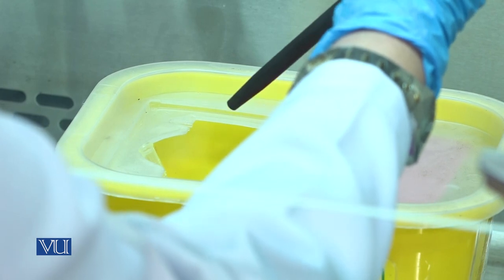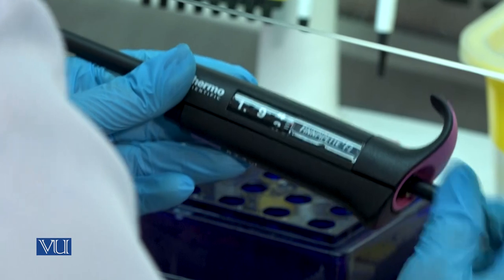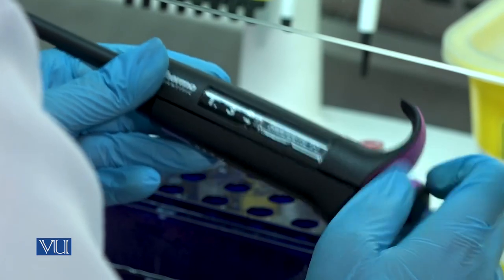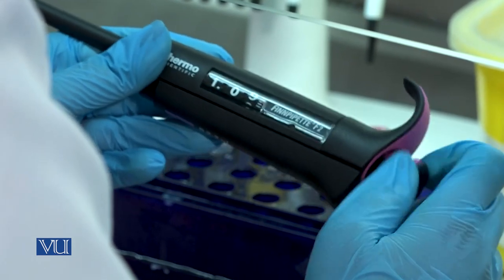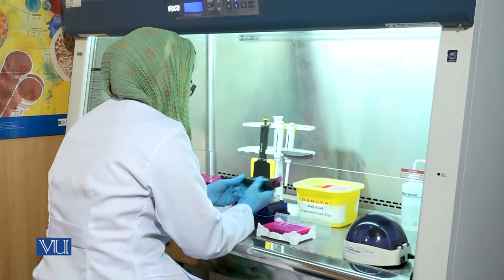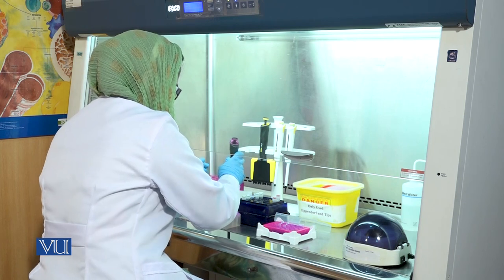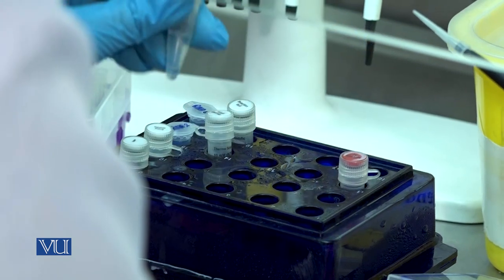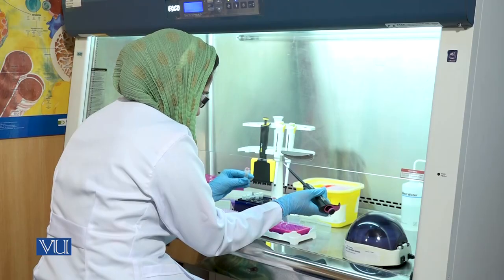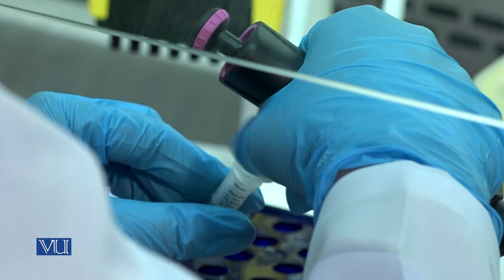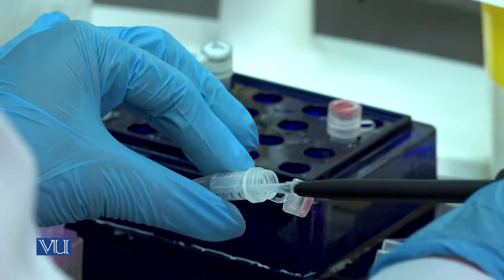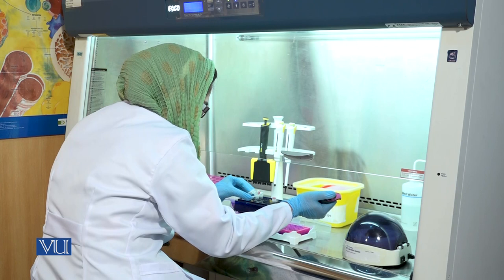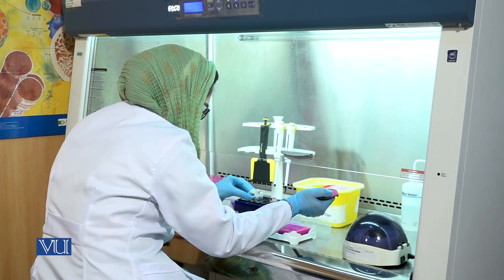Discard the used tip in the waste box. Now set the micropipette to 1 microliter. Take 1 microliter of ribolock RNase inhibitor and add it in the PCR tubes. RNase inhibitor is used to protect RNA from the activity of RNases.